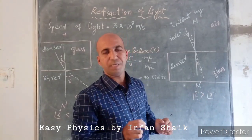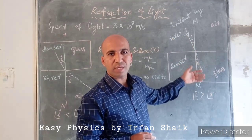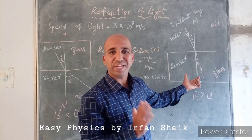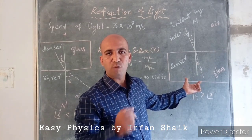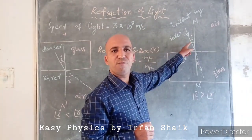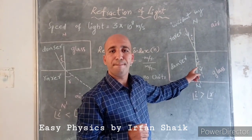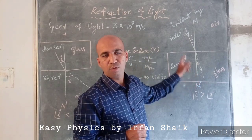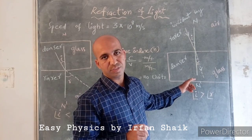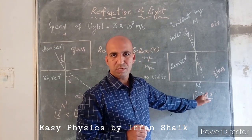Let us take the first case — when a light ray is traveling from air to glass. Air is called the rarer medium and glass is called the denser medium. When the light ray travels from a rarer medium to a denser medium, if you observe the diagram carefully, the angle of incidence is greater than the angle of refraction. That means the refracted ray bends towards the normal line. So when a light ray passes from a rarer medium to a denser medium, it bends towards the normal, and the angle of incidence is always greater than the angle of refraction.